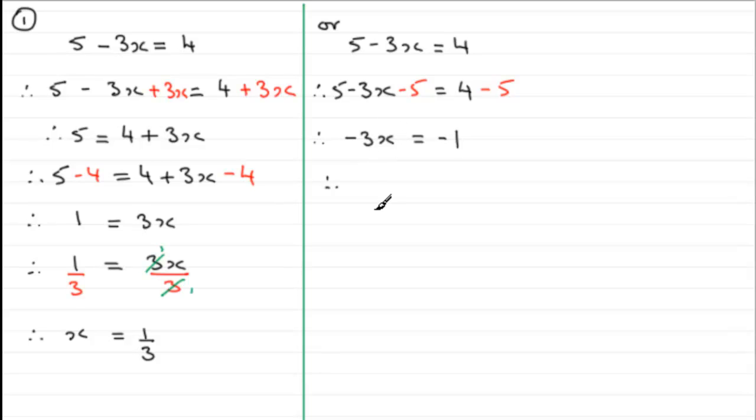And what I've now got to do is to get rid of the minus 3 from the x here. So I take my equation minus 3x equals minus 1, and I now divide both sides by minus 3.